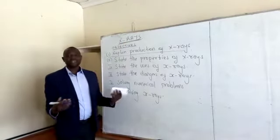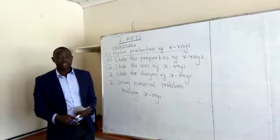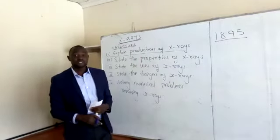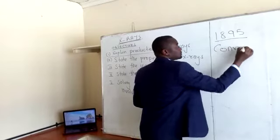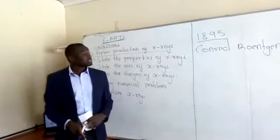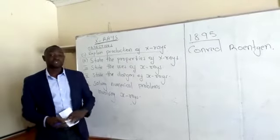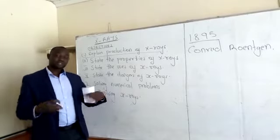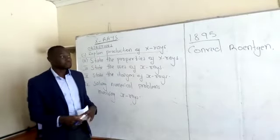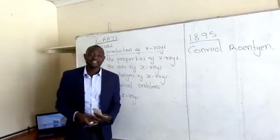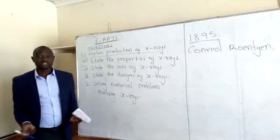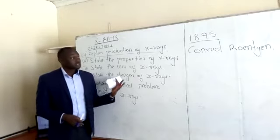X-rays are simply called x-rays — but why this term? X-rays were first discovered in 1895 by a German physicist named Conrad Röntgen, when he was doing experiments on cathode rays. Because the nature of these rays was not known at the time, they were named x-rays. Just as mathematicians use 'x' for anything unknown, this physicist also used 'x' when the nature of these rays was not yet understood.